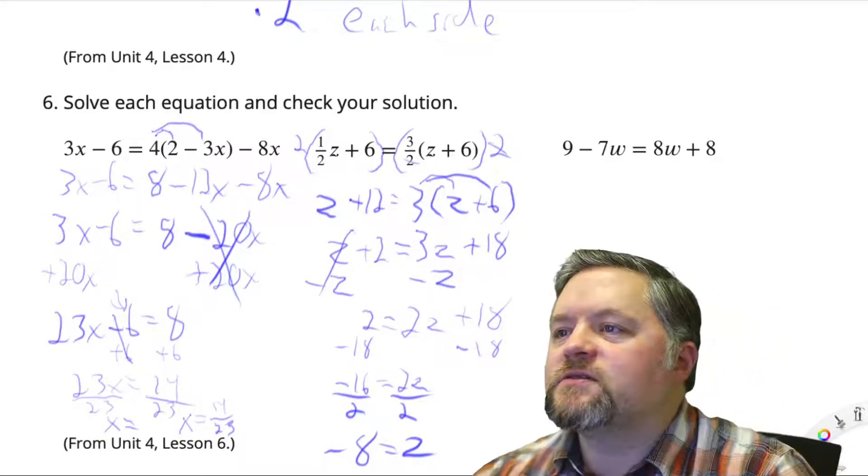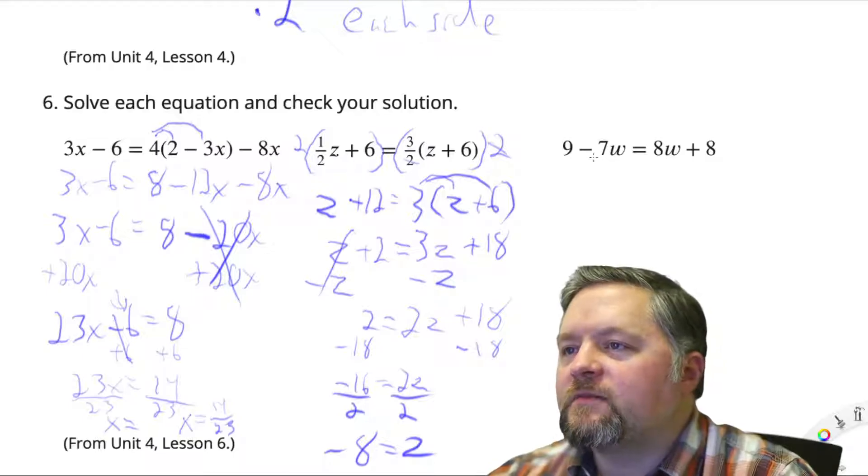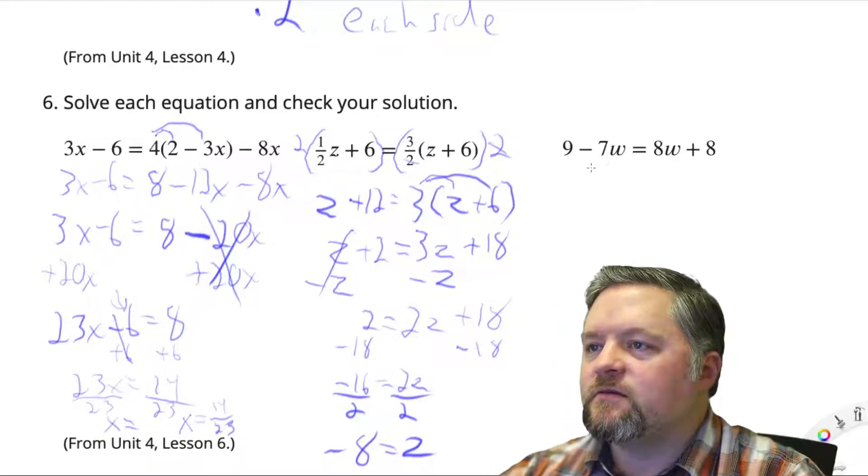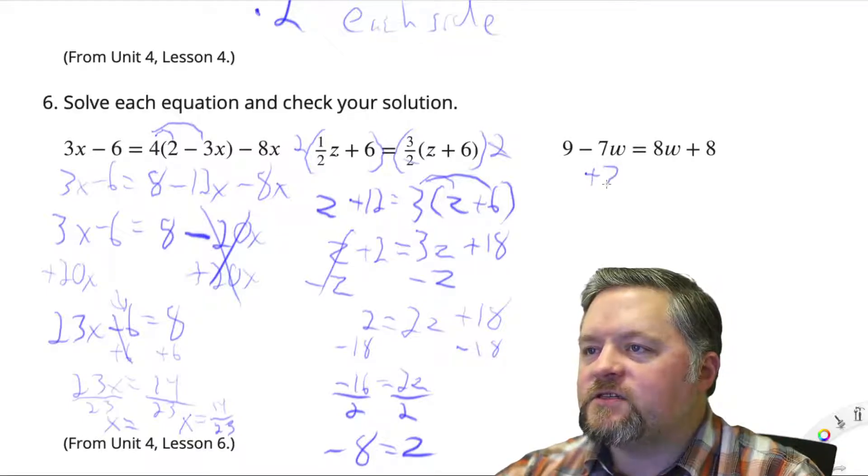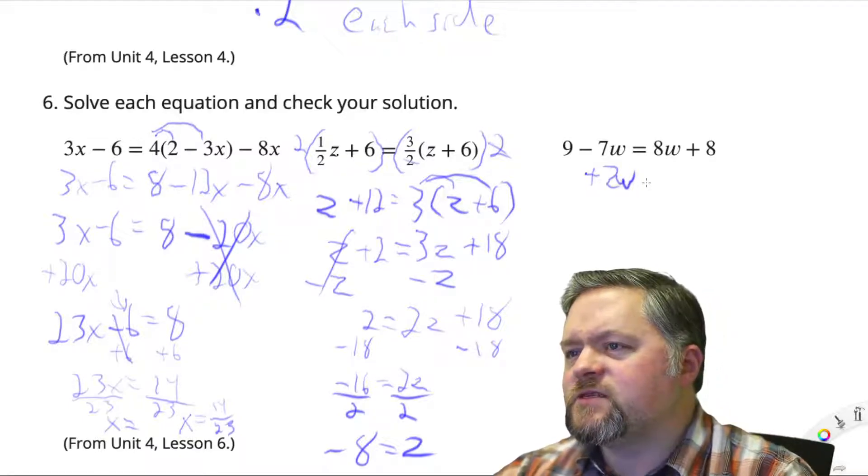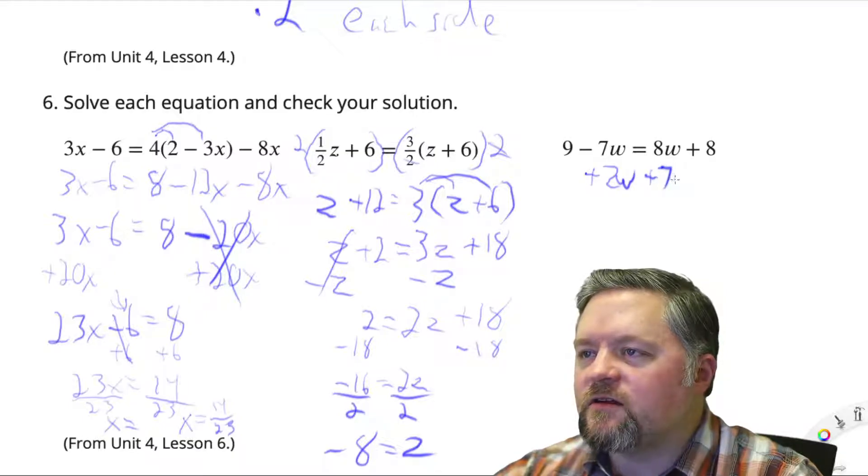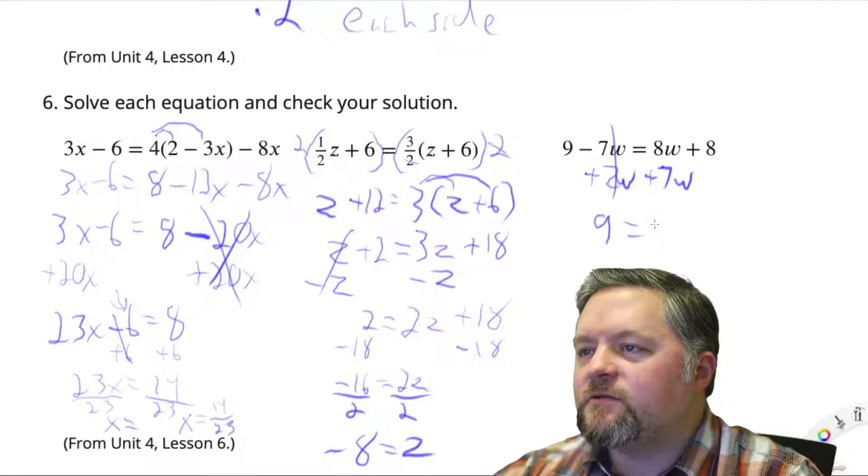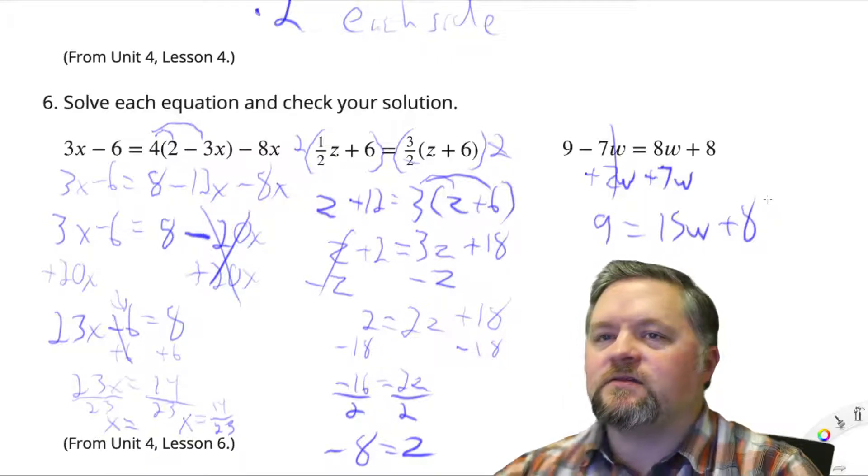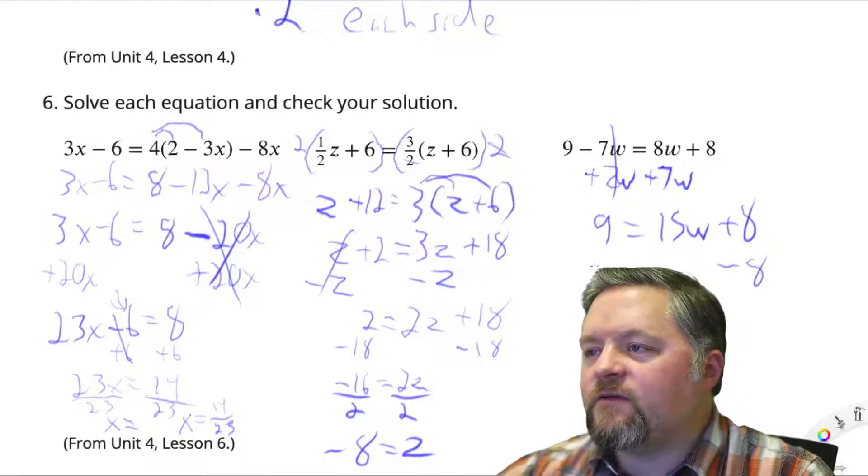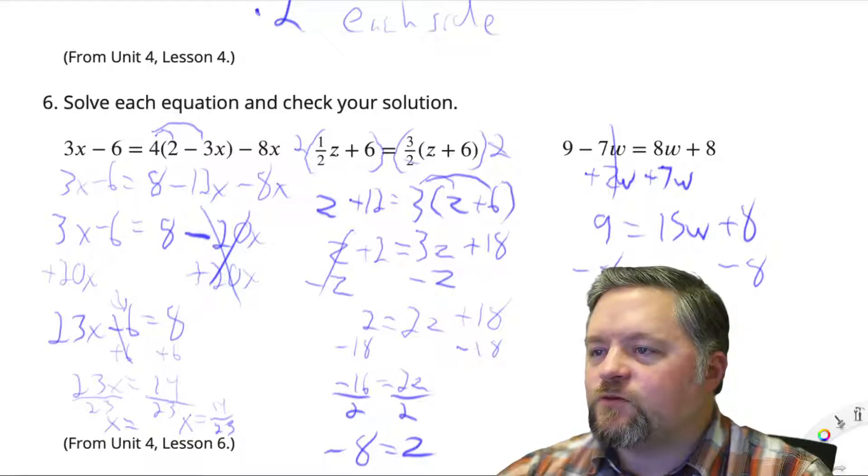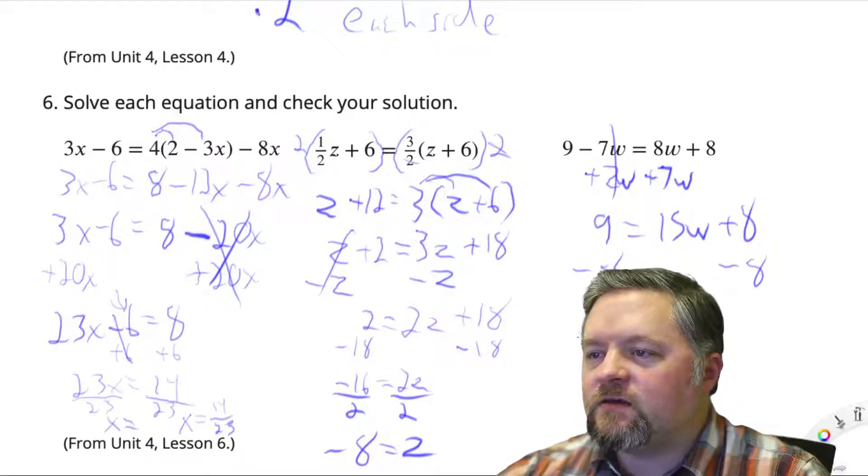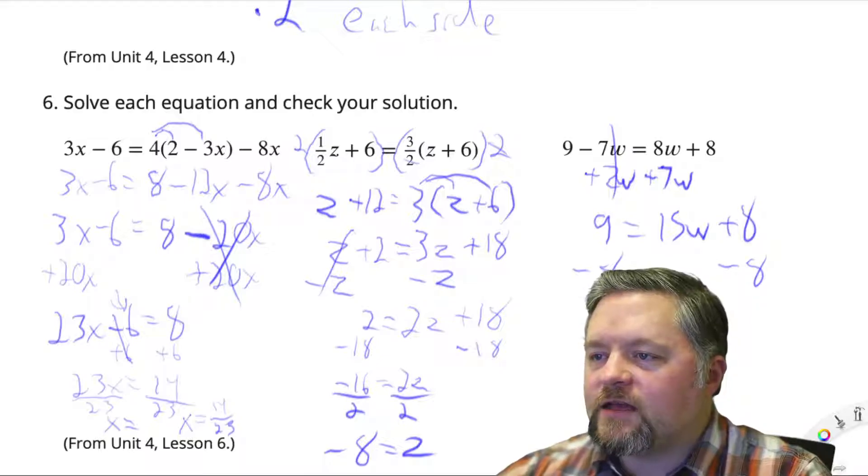One more of these. 9 minus 7w equals 8w plus 8. Let's get rid of the negatives. Add 7w to each side. We're left with 9 equals 8w plus 7w is 15w plus 8. Now subtract 8 from each side. 9 minus 8 is 1 equals 15w. Divide each side by 15. 1 over 15 equals w. Yay!